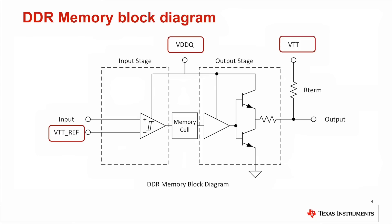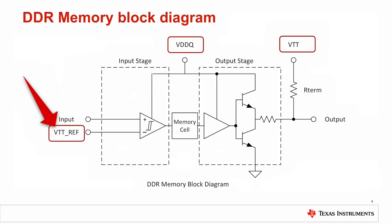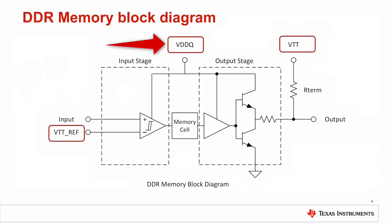The Joint Electron Device Engineering Council, JEDEC, implemented this active DDR termination standard. The VTT voltage is required to track a reference, VTTREF, which is created by dividing the memory core rail, VTTQ, exactly in half as shown in this block diagram. The JEDEC specification defines the voltage tolerance on the VTTQ, VTT, and VTTREF rails, but leaves power delivery calculations to system designers.